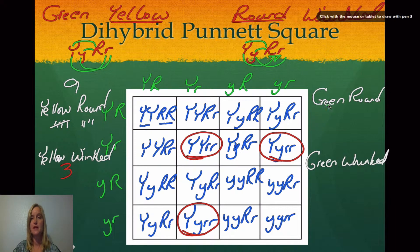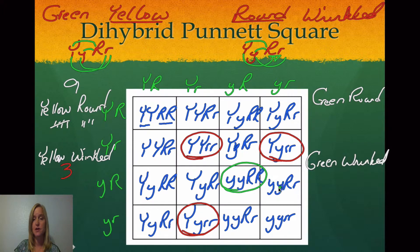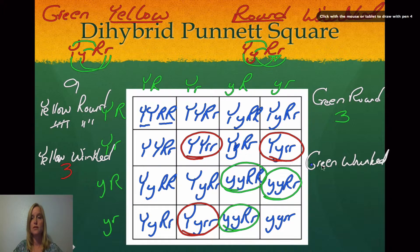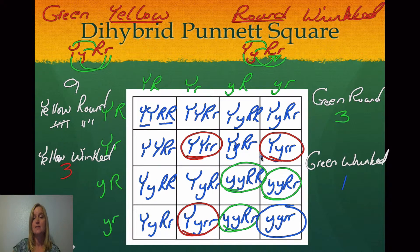Now I'm going to find the ones that are green round. For green round, I need the y's to be lowercase and the R's to have at least one uppercase letter — so I'm looking for lowercase y's where there are uppercase R's. I have three of those. Then for green wrinkled, I'm looking for lowercase y's and lowercase r's, and there's only one of those.